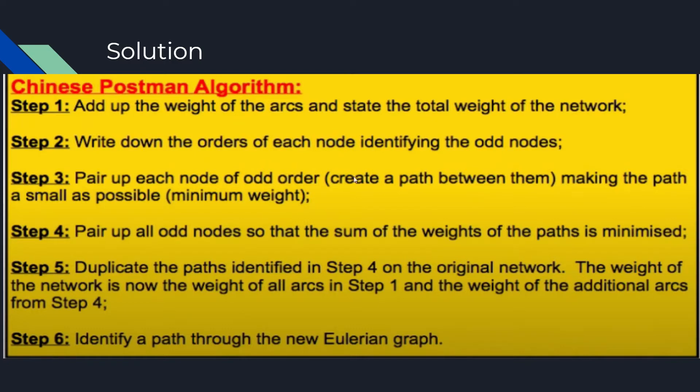So, step three, once we've identified the odd nodes, the nodes or vertices that have an odd number of edges coming out of it, we can then pair up each node of odd order, meaning to create a path between them, making the path as small as possible, meaning the minimum weight. So, when I have multiple nodes with odd order, I can pair them together and make the smallest path possible between each pair of odd order vertices.